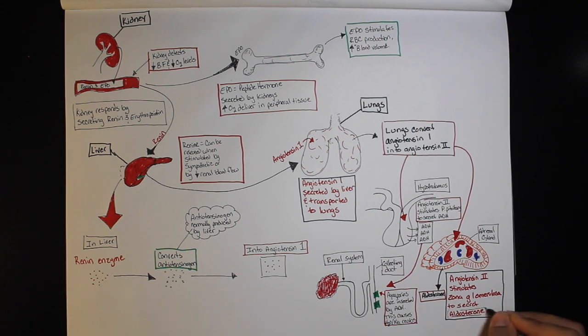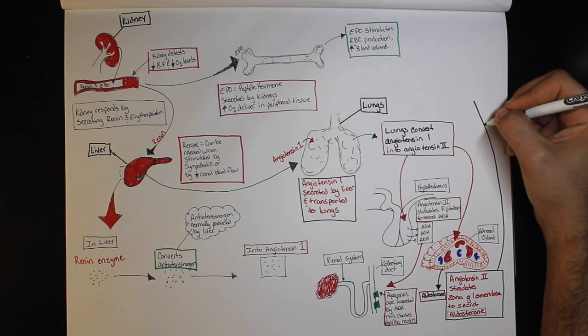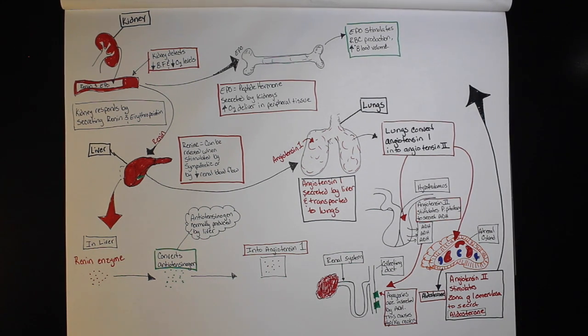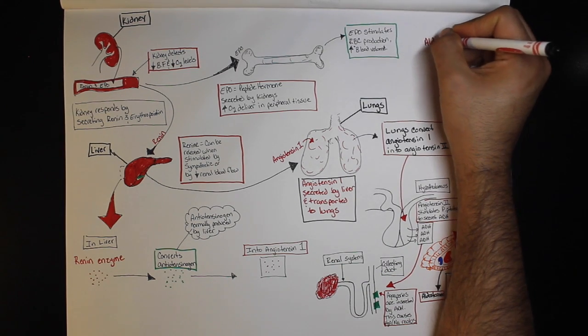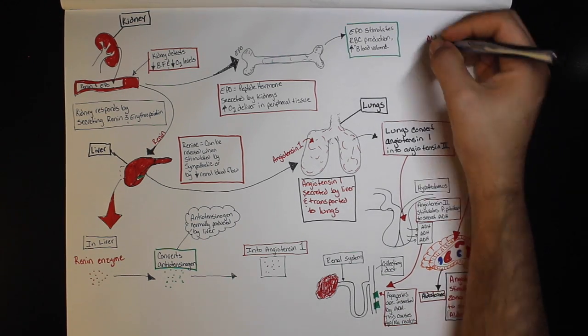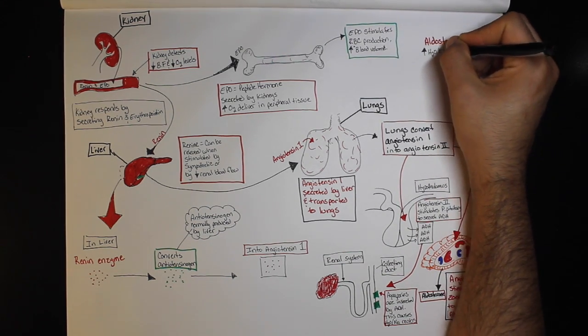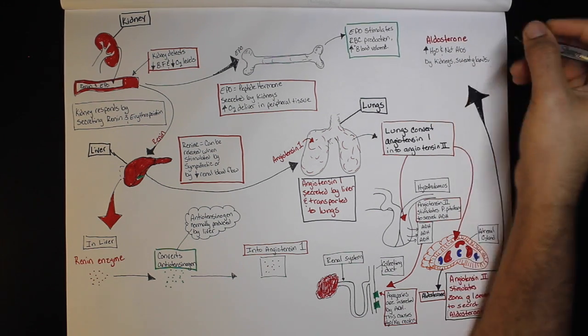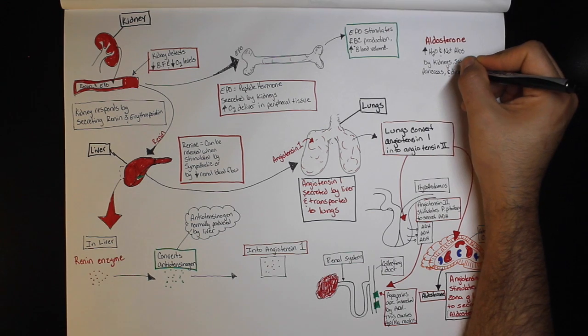Aldosterone acts directly on the distal tubules and collecting ducts of the nephron. This causes sodium conservation and potassium excretion. This, in turn, will increase water retention, which will cause an increase in blood volume and blood pressure.